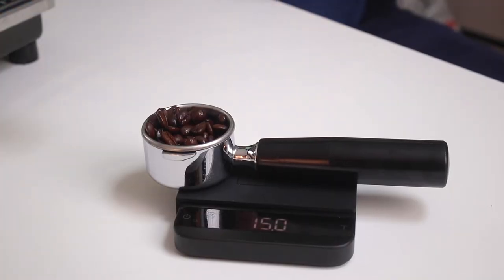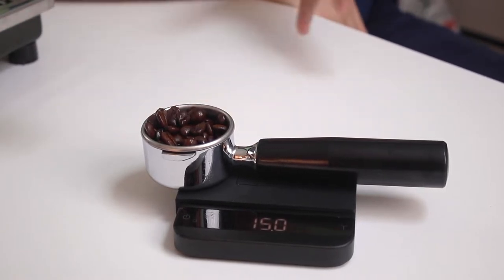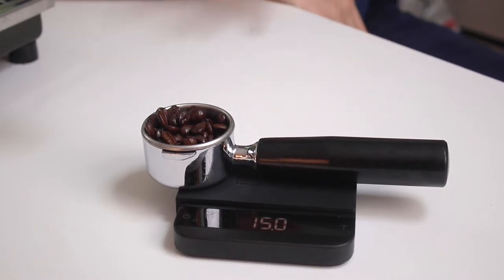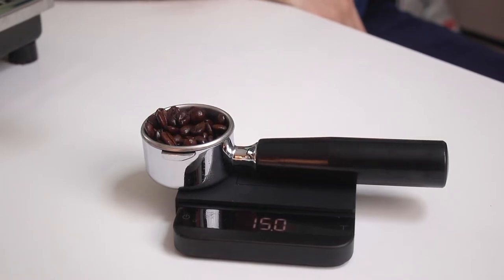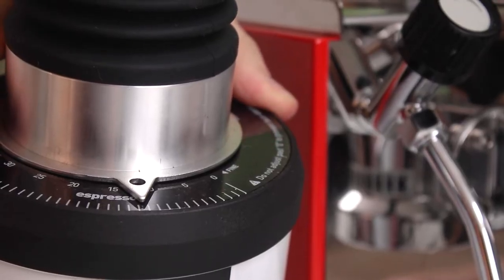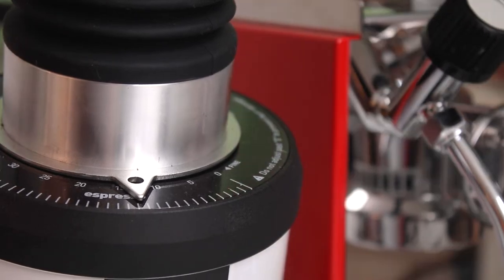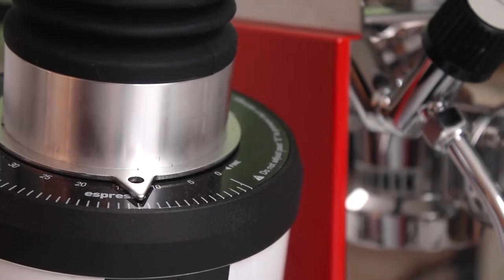So this is a 15 gram dose. I wouldn't normally try to dose more than this on the portafilter just because I don't want the basket to overflow. Because these beans are relatively low density, I'm going to grind a little bit coarser than I normally do. I'm going to start the grind at around 14 on the DF-64.